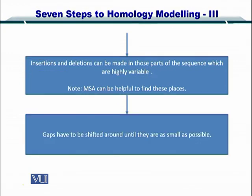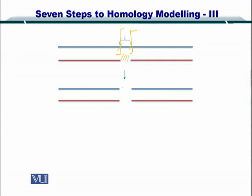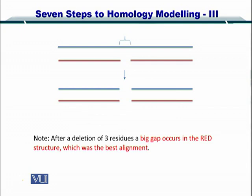The next step is to shift the gaps such that the gaps are as small as possible. If you have a gap, the amino acids in that region need to be removed. You cut the protein here and here, removing certain amino acids, then join the two parts together to give rise to a new protein that is slightly shorter in length. Once you have removed those extra amino acids, you can see there is a gap that remains.